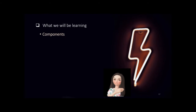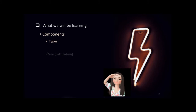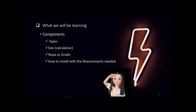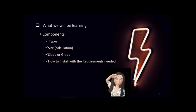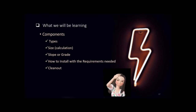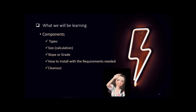Here is a brief overview of the components of the sanitary drainage system. We will learn about their type, size — calculated using basic multiplication and addition — the slope or grade needed to properly incline the pipe for smooth wastewater flow, installation requirements based on the national plumbing code, and the cleanout provision. This is a heads-up so that you will not be confused about why there is a cleanout in every component.